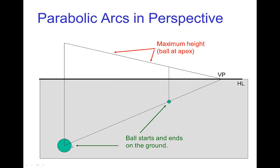You have the starting point and ending point, and you pick the maximum height that you want for the arc. Now locating the middle is a little bit more complicated because we're working in perspective. So here we use the diagonals to locate the center, and then draw a vertical from there, and then that's the position of the apex.